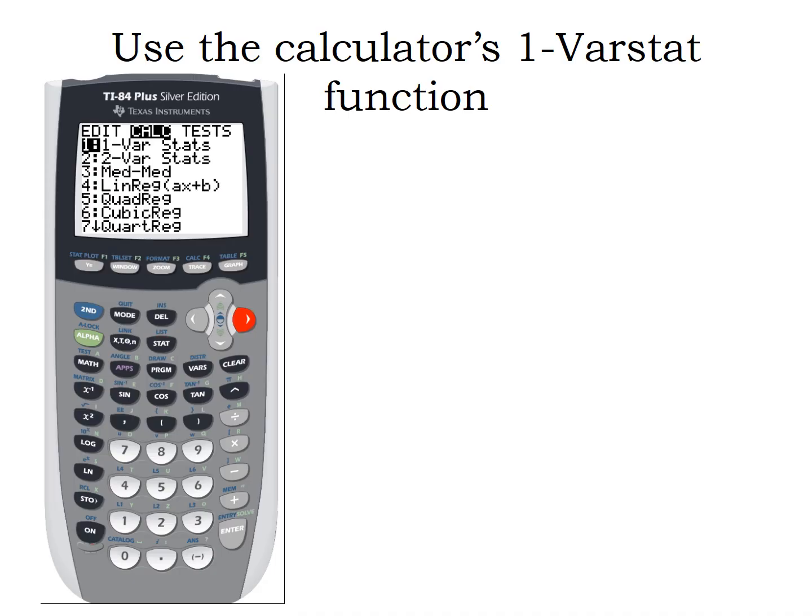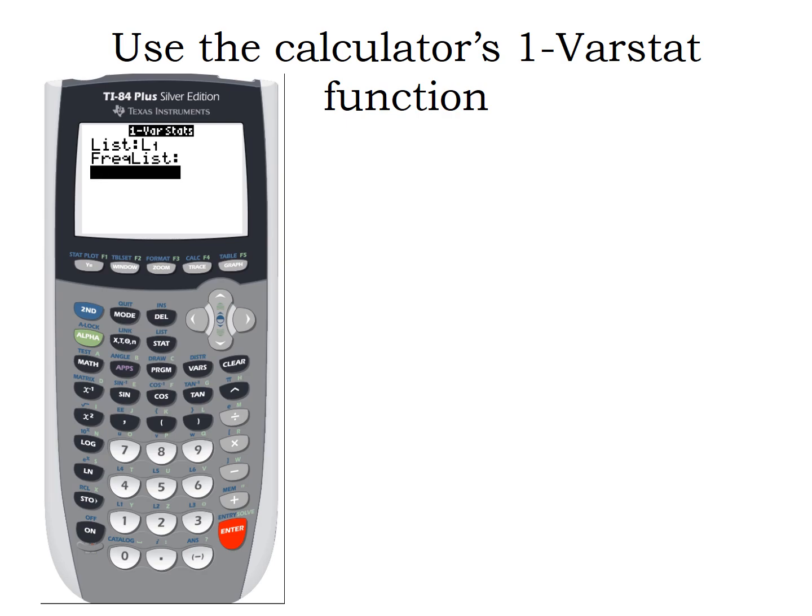And now I'm ready to calculate my statistics. So we're going to scroll to the right and we want to do the one variable statistics. We have two variables. We're going to do each one, one at a time. So I want to do list one first. I got to tell the calculator to do the statistics for list one. So here I'm going to hit second function, then the number one, to tell it list one. You want to leave the frequency list blank and the calculate blank. So you can either hit enter twice or scroll down twice. Once you get to calculate highlighted here, you want to hit enter and it'll calculate your statistics for you.